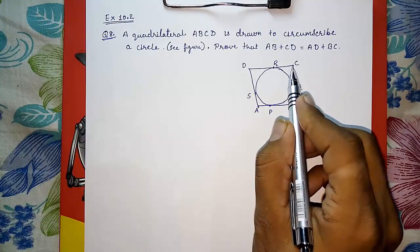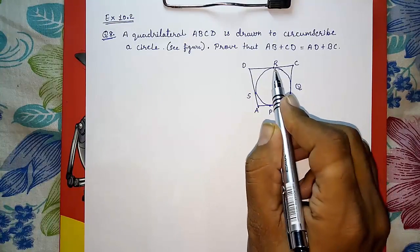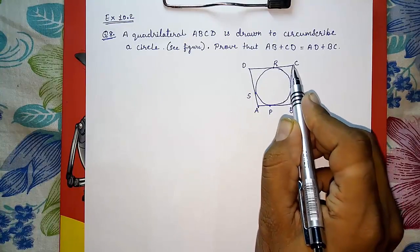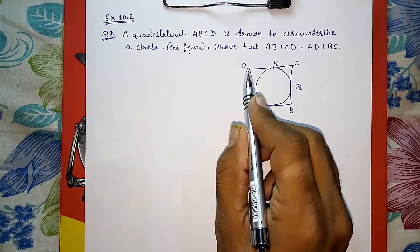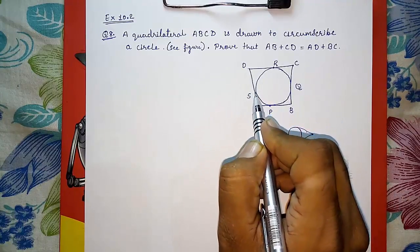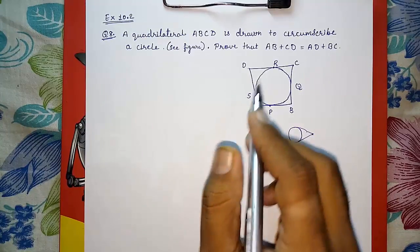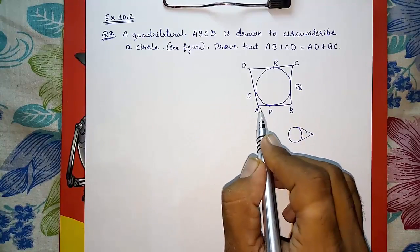Here also these two are tangents. You can say CR and CQ are tangents from C. Here from D, DR and DS are the tangents. So directly, one by one, I am going to write all the tangents which are equal.